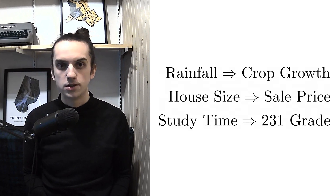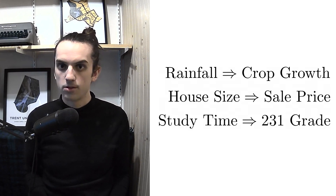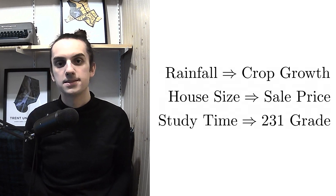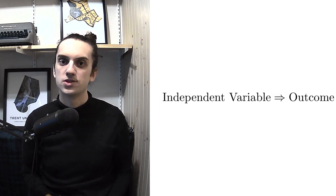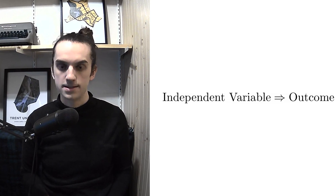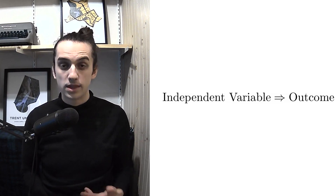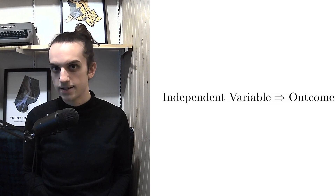Now, in the real world, often we are concerned not with one quantity by itself, but rather how one quantity is impacted by another. We might want to know how the amount of rainfall in a region impacts crop growth, or how the size of a house impacts its sale price, or the relationship between the number of hours that you study and your grade in Stat 231. In each of these scenarios, we have a variable which is an outcome — crop growth, house prices, or grades — and an independent variable which we think may be related to the outcome. In these settings, we are not as interested in estimating the parameters of the outcome variable directly, but rather in estimating some type of relationship between these traits.